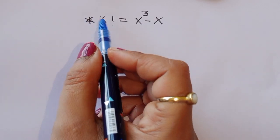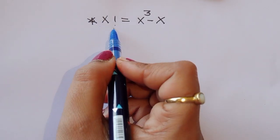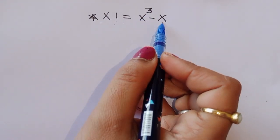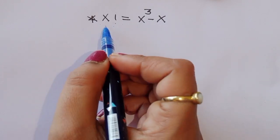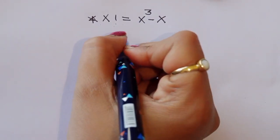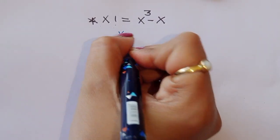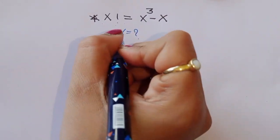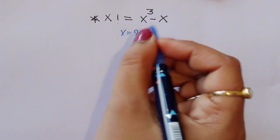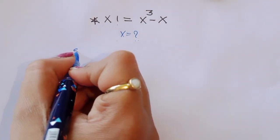The question is: factorial of x is equal to x cubed minus x. We have to find out the value of x. Let's see the solution.